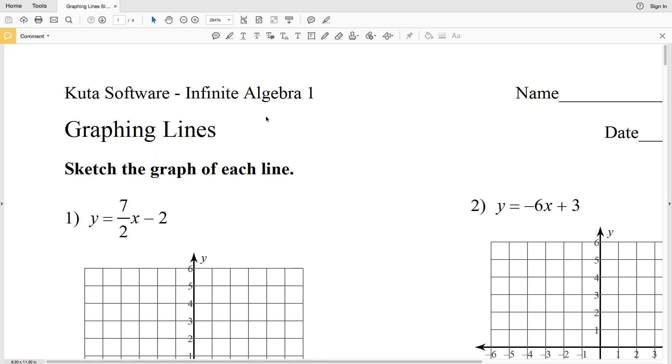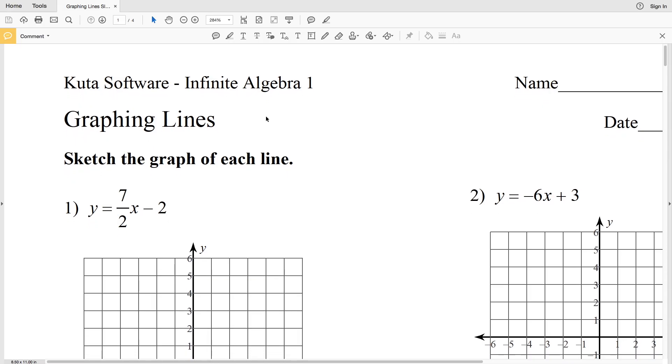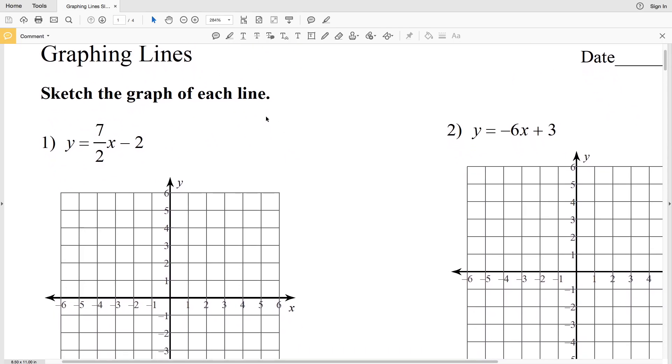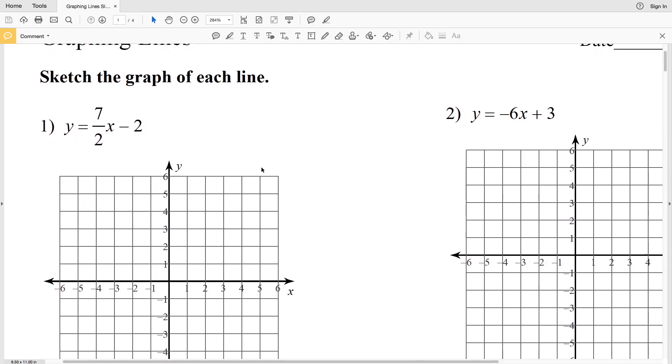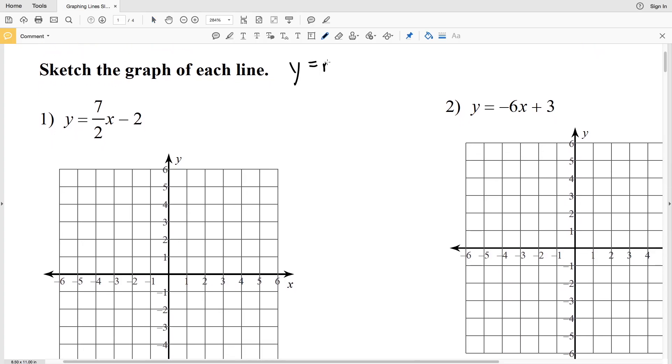In this video we're going to start the graphing lines worksheet under this Kuta Software Infinite Algebra 1 tab. I'll go ahead and leave a link in the description below of how to access that worksheet. Our directions are to sketch the graph of each line. Each of these equations is in the form of y equals mx plus b, where b is the y-intercept, so that's where the line crosses or intersects the y-axis, and m is the slope of the line.